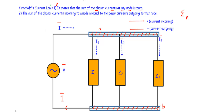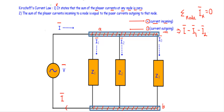Writing KCL in equation form: summation of phasor currents at a node equals zero. In this circuit we have four currents: I, I1, I2, and I3. Incoming currents are denoted with a plus sign and outgoing currents with a minus sign. Current I is entering, so +I. Currents I1, I2, and I3 are outgoing, so −I1 − I2 − I3 = 0.